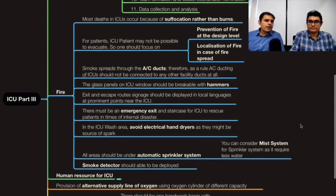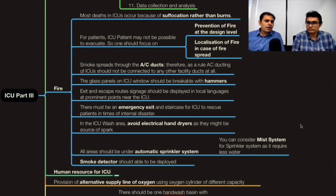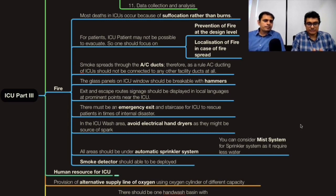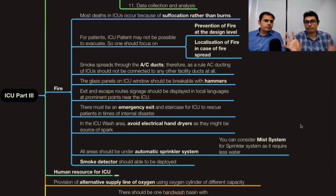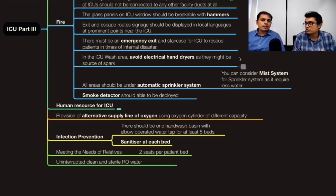All areas should be under automatic sprinkler systems — modern systems require less water so less space needs to be allocated for the fire tank. Smoke detectors should be deployed wherever required. Most of these will be necessary when going for NABH accreditation, so it is better to have all this in place at the planning stage. It is worth the cost because it will save a lot of other costs.